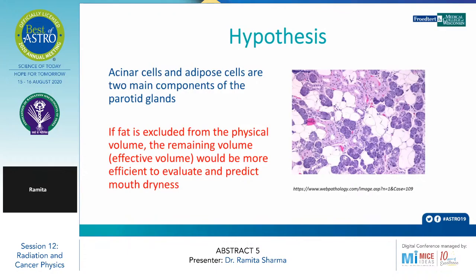Parotid glands are made up of basically two cells: acinar cells and adipose cells. The hypothesis taken is that if the fat is excluded from the physical volume of the parotid glands, the remaining volume — that is, the effective volume — would be more efficient to predict mouth dryness.